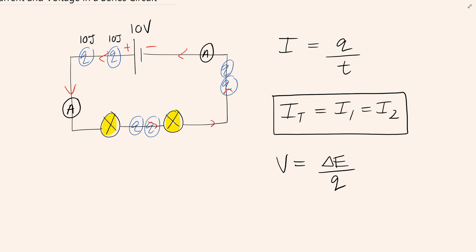Those problems are a little bit more challenging. So essentially, if we were to put a voltmeter across lamp 1 and a voltmeter across lamp 2, we know that the energy has to be shared between those two lamps.